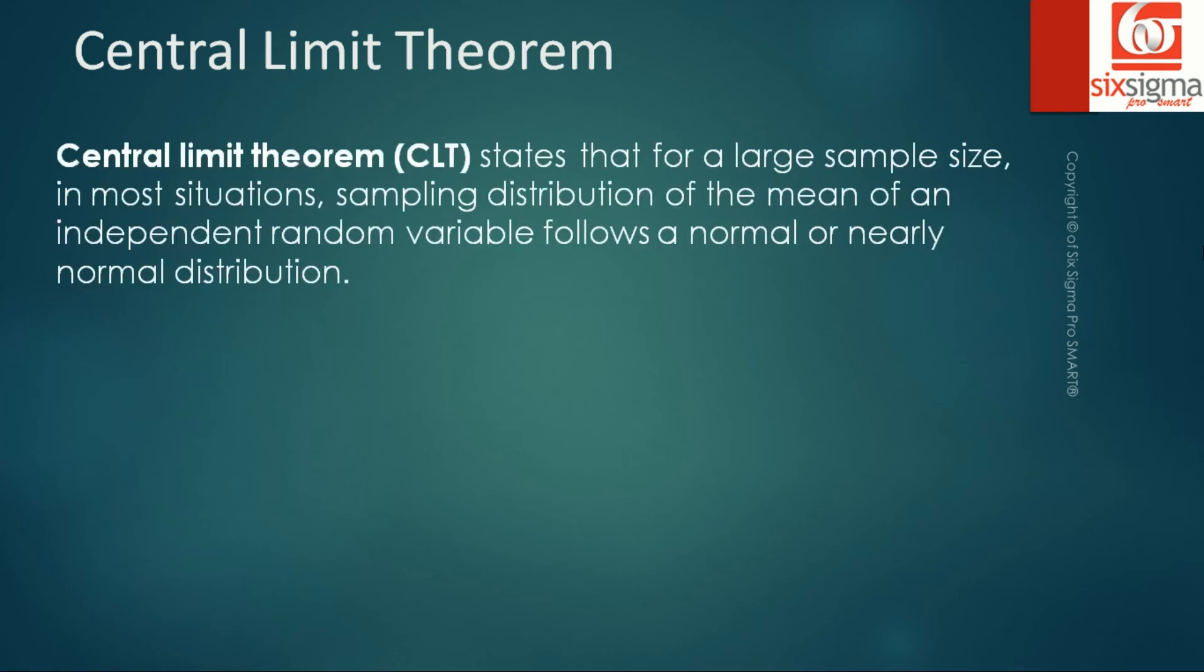So the definition says that central limit theorem, or CLT, states that for a large sample size, in most situations, sampling distribution of the mean of an independent random variable follows a normal or nearly normal distribution. We saw that just now—we were performing an experiment which had a discrete output, it was nowhere close to being continuous. However, when we took multiple samples from the same discrete population and plotted the sample means, it tends to follow a normal distribution.